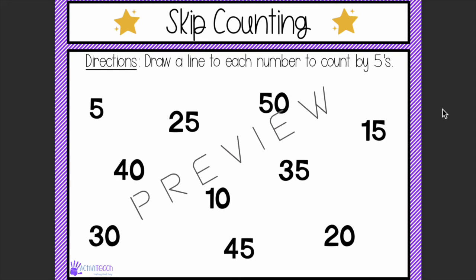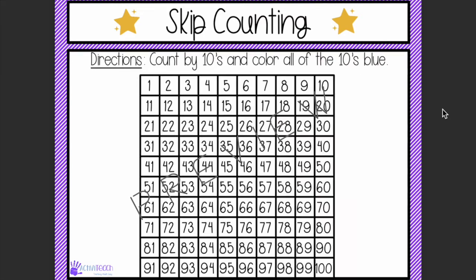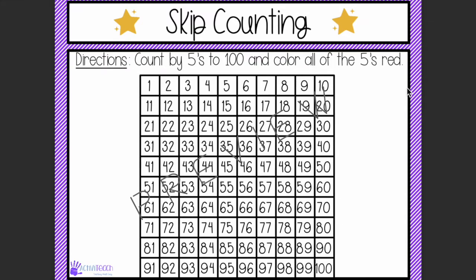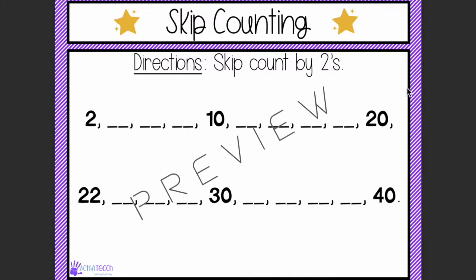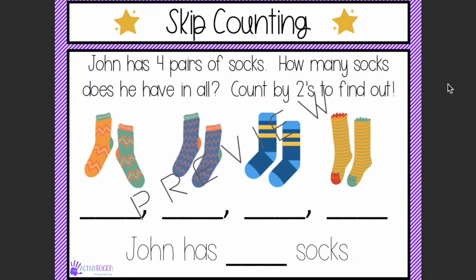The packet also includes counting by threes, fives, tens, 20s, and 25s. I love to teach counting by 25s because it gets students ready for when I teach money. It also covers 50s and 100s. There's a section where students count by tens and color all the tens blue, as well as activities for fives and 20s where students write in the correct answer in each blank, plus word problems for students to solve.